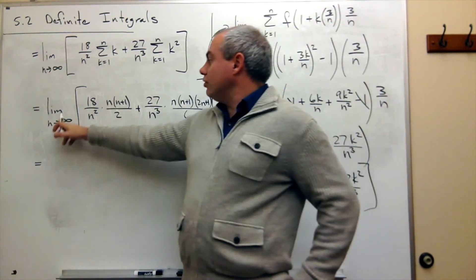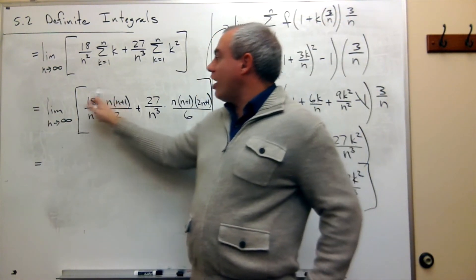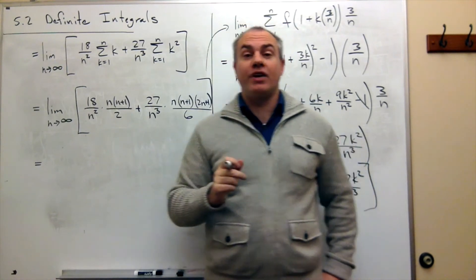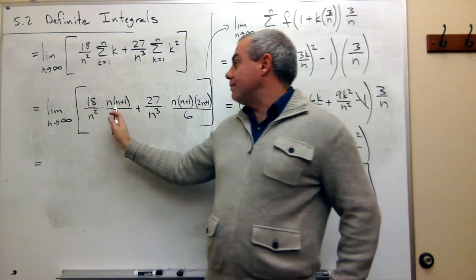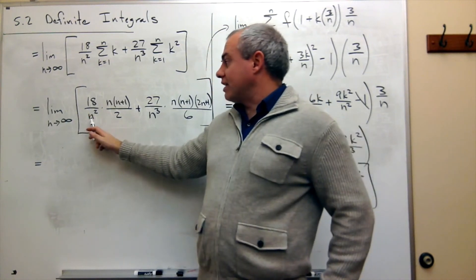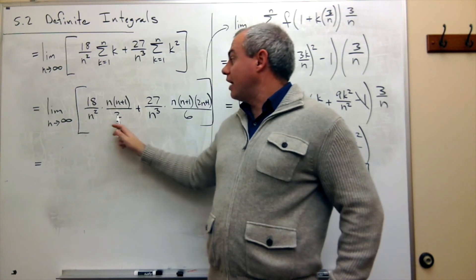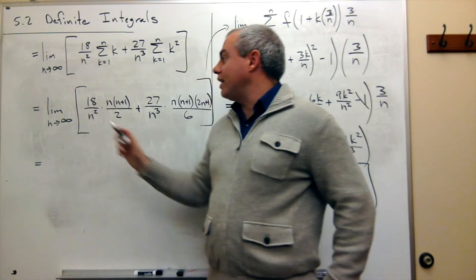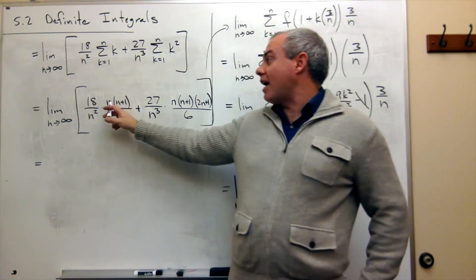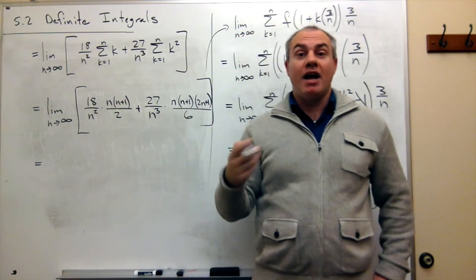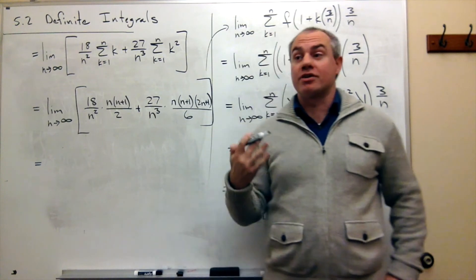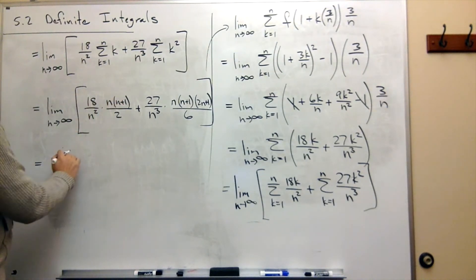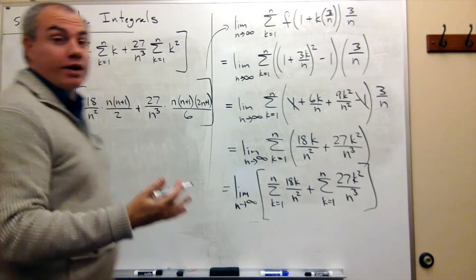So let's look at this limit as n goes to infinity. Notice on top, if I were to multiply everything out, I have an n squared, and the coefficient on the n squared term would be 18. On the bottom, I have an n squared with coefficient 2. So I have 18n squared over 2n squared as n goes to infinity. Since the power of n on top and bottom is the same, I just take the coefficients in front of the highest powers of n: 18 on top, 2 on the bottom. So the limit of this first term is 18 halves, or 9.